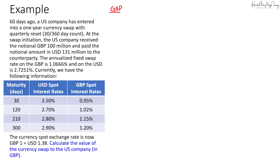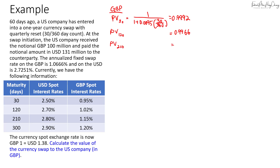Now onto the pound side. We calculate the PV discount factors using the GBP rates. For the 30-day rate: 1 divided by (1 + 0.0095 × 30/360) = 0.9992. For 120 days: 0.9966. For 210 days: 0.9933. For 300 days: 0.9901. Summing all these gives a total PV factor of 3.9792.